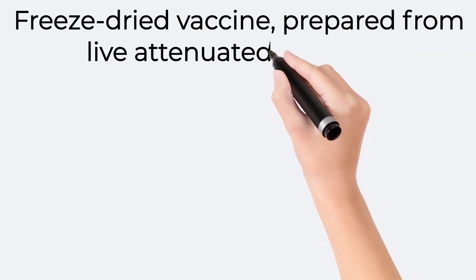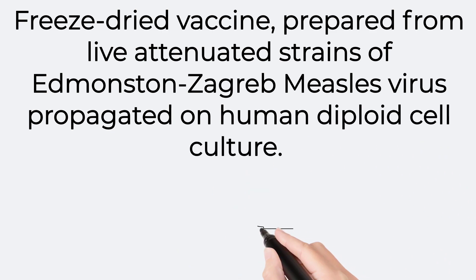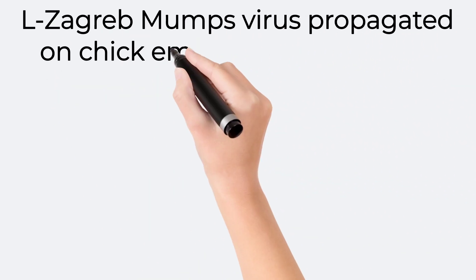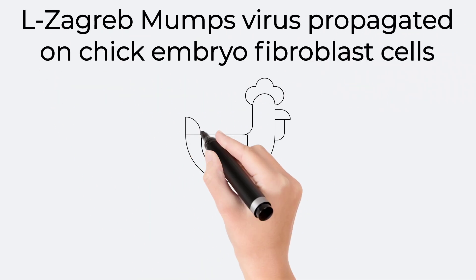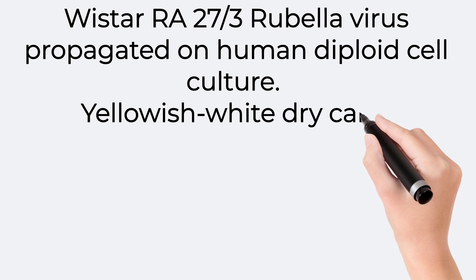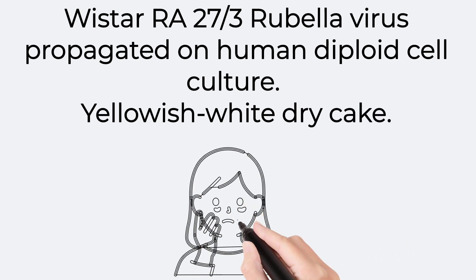It is a freeze-dried vaccine prepared from live attenuated strains of Edmonston-Zagreb measles virus propagated on human diploid cell culture, Zagreb mumps virus propagated on chick embryo fibroblast cells, and Wistar RA 27/3 rubella virus propagated on human diploid cell culture. It is available as a yellowish-white dry cake.